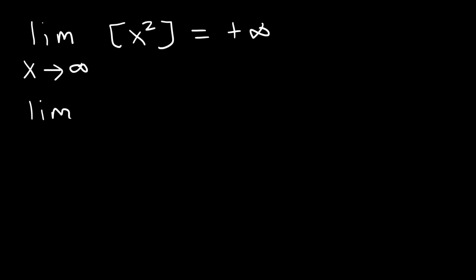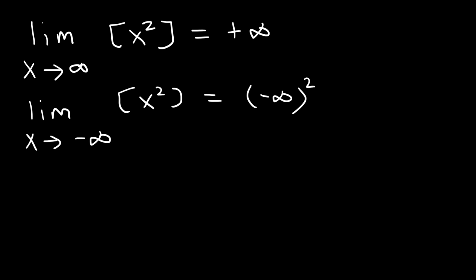What about the limit as x approaches negative infinity of x squared? If we replace x with negative infinity, when you square a negative number it's going to be positive. So the answer is positive infinity. For example, negative 1,000 times negative 1,000 is positive 1 million, so you still get a very large positive number.